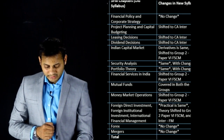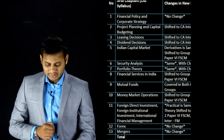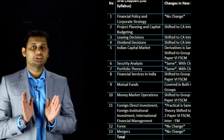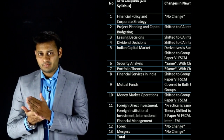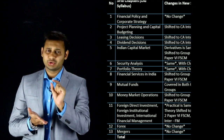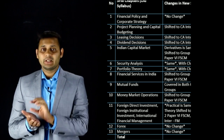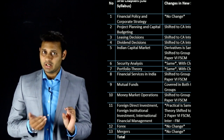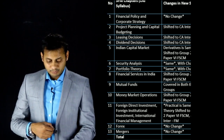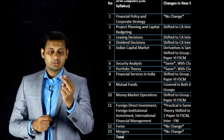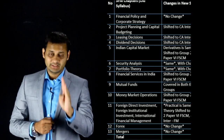Let's look at what changes have been made chapter by chapter in the new syllabus. Chapter 1 — Financial Policy and Corporate Strategy — there is no change. This is a very small, theoretical, and basic chapter of SFM which has been kept the same in the new syllabus. Chapter 2: Project Planning and Capital Budgeting. Chapter 3: Leasing Decision. Chapter 4: Dividend Decision.